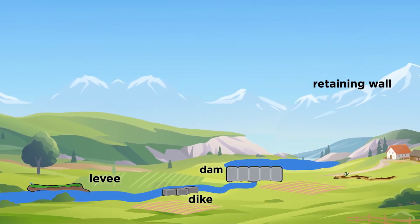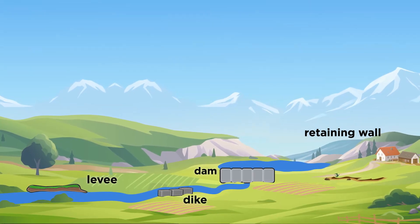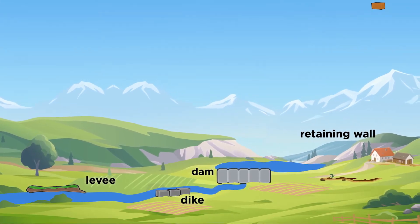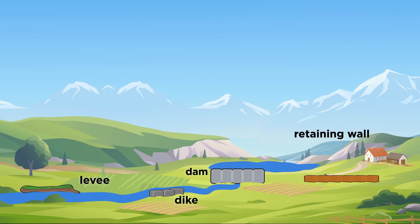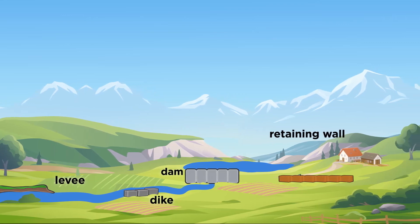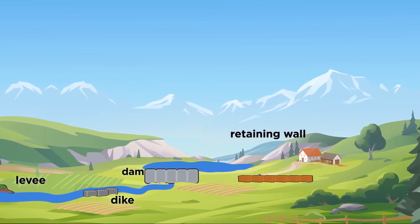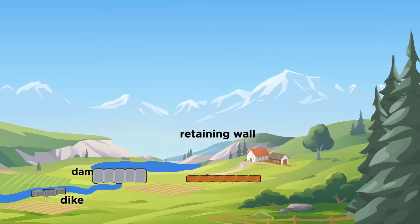Retaining walls are one last type of structure that can prevent water erosion. These walls are built to keep the soil behind them from moving. Because retaining walls can be used in many situations, they range in size. Most of these walls are small and used in home landscaping. Retaining walls are usually used to hold land that is sloped rather than flat. They keep runoff from washing away the uneven soil.